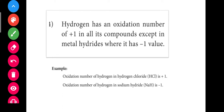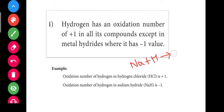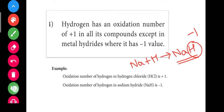The fourth rule: hydrogen has an oxidation number of plus 1 in most compounds. However, in metal hydrides, hydrogen has an oxidation state of minus 1. For example, sodium hydride and magnesium or lithium hydrides — in these, hydrogen is minus 1. We will see more examples of this rule in the video.